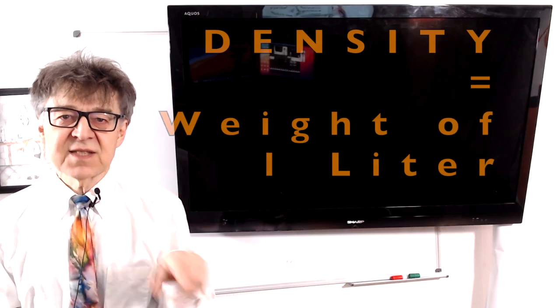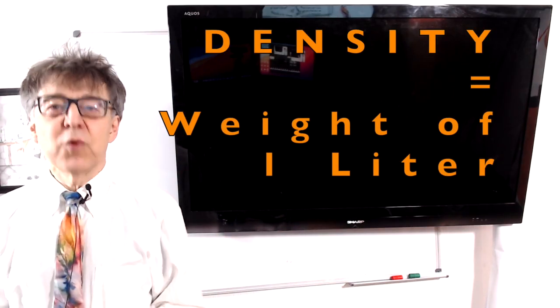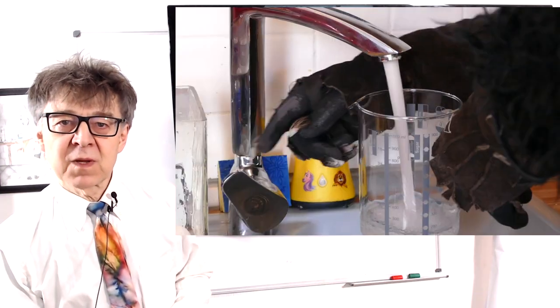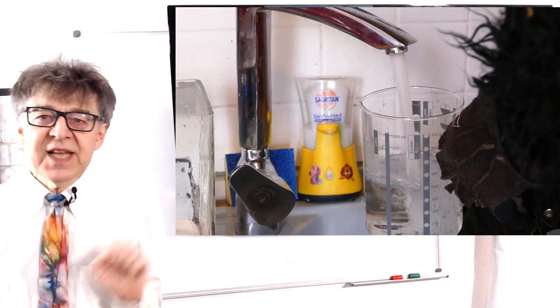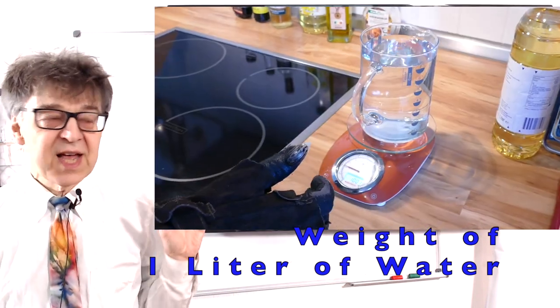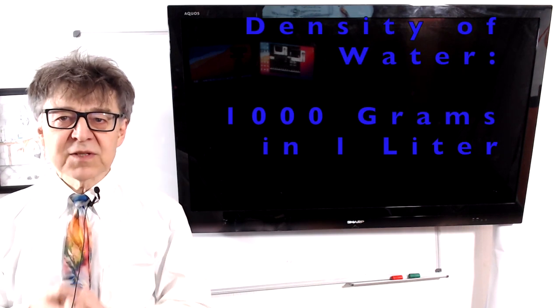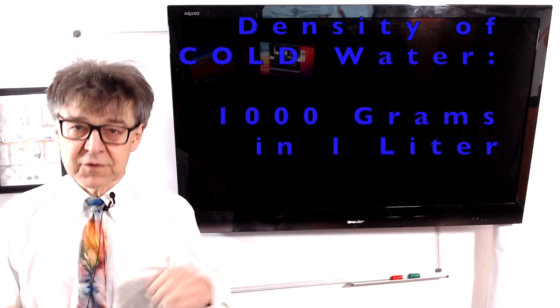Well, density is the weight of one liter. Grey is now going to measure the density of water. For this we need exactly one liter of water. Put it on the scales and it weighs about 1000 grams. 1000 grams in one liter is the density of water, of cold water.